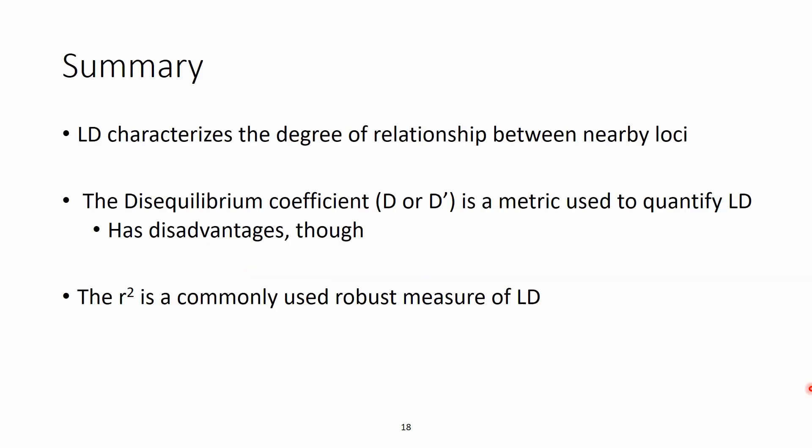So to summarize this video, the LD characterizes the degree of relationships between the nearby loci. There are various methods and possibilities to measure it. One of them is the disequilibrium coefficient denoted by D or as a D' that is a metric to use to quantify the LD, but it has some disadvantages. And then the other more commonly used metric is the r square or the squared correlation coefficient that is a robust measure of the LD.